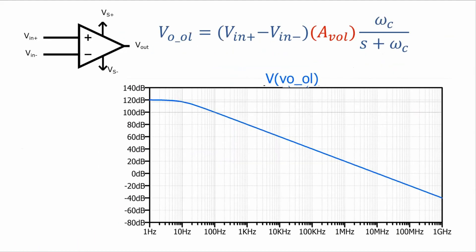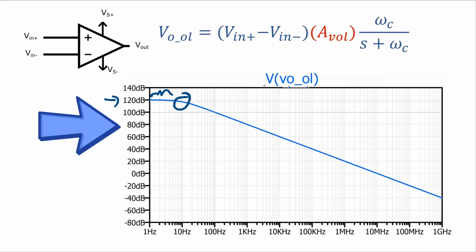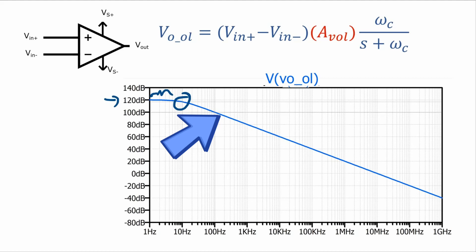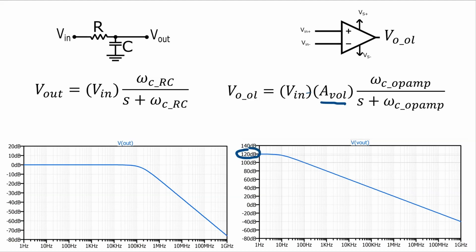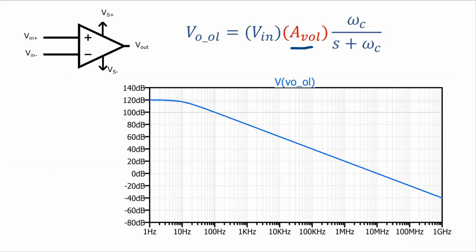The frequency domain plot would look something like this. Here's the passband part with flat gain, but you'll notice the output starts at 120 dB for this particular op-amp. There's the cutoff frequency, and then the response falls at a rate of 20 decibels per decade. Comparing the two side by side, here's the RC low-pass filter compared beside the open-loop op-amp. Very similar expressions except for the AVOL term. Also remember this Vin is the difference between Vin+ and Vin−. They have the same basic shape, except the op-amp passband has a much bigger value at 120 dB versus 0 dB, and the open-loop op-amp cutoff frequency is very low — about 10 Hz. That's typically the order of the cutoff frequency for an open-loop op-amp: 10 Hz or tens of Hz.